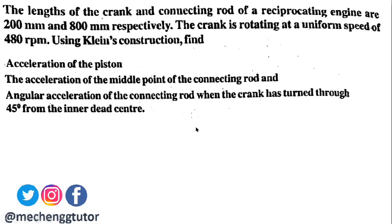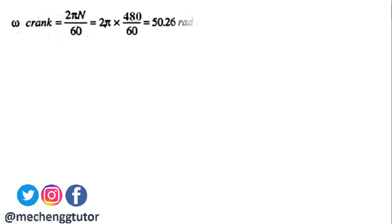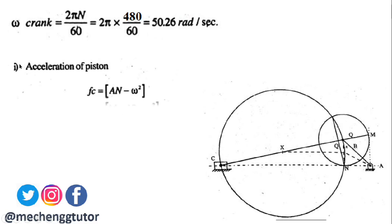The orientation of the slider crank mechanism is the same as in the previous problem; here the direct lengths are given. The rpm is 480, so the angular velocity of the crank OA is 2πN/60 = 2π × 480 / 60, giving ω = 50.26 radians per second. Drawing Klein's construction, the acceleration of the piston Fc is obtained as AN × ω².